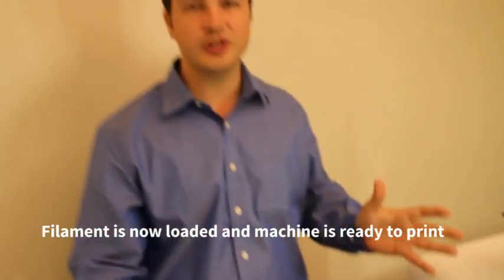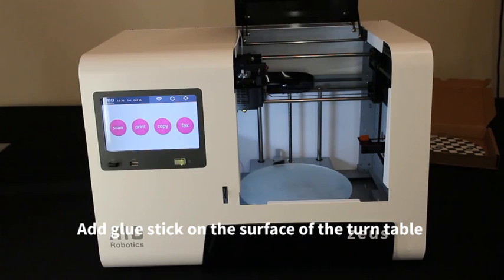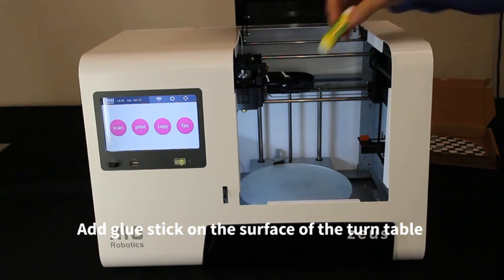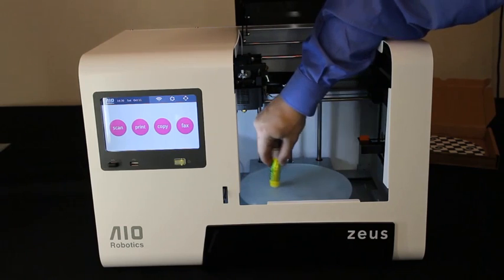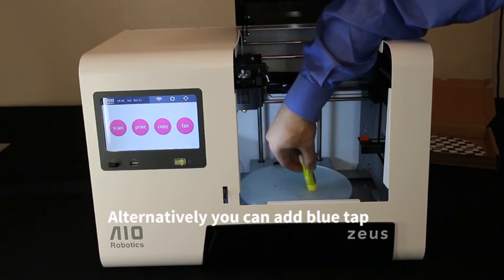Now the Zeus machine is filled with the filament and is ready for print. For the first print, remember to add glue stick on the surface of the turntable. Alternatively, you can also use blue tape.